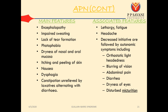The main and associated features of APN include encephalopathy, impaired sweating, lack of tear formation, photophobia, dryness of nasal and oral mucosa, itching and peeling of the skin, nausea, dysphagia, and constipation unrelieved by laxatives. Associated features include lethargy or fatigue, headache, decreased initiative, followed by autonomic symptoms including orthostatic lightheadedness, blurring of vision, abdominal pain, diarrhea, dryness of eye, and disturbed micturition. All of these are signs and symptoms of APN, which is a relatively very rare condition.